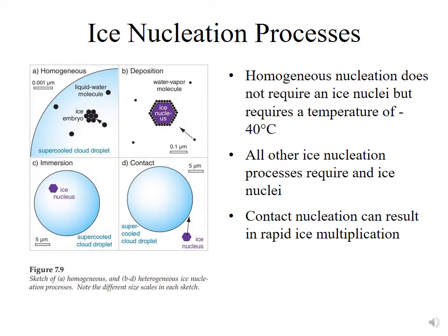A third version of ice nucleation is immersion, where you have a particle that was a cloud condensation nucleus — essentially the basis of the formation of a droplet. As that droplet cooled, one of the particles inside that droplet will start to act as an ice nuclei. In that case, you can actually freeze the droplet from the inside because you have this ice nuclei inside the droplet.